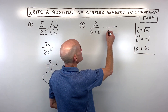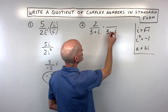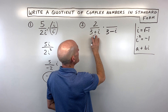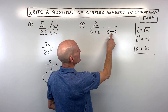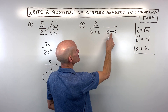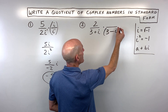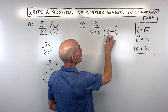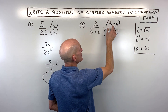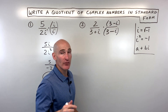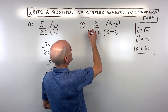The complex conjugate uses the same two quantities you see in the denominator, but you change the sign in between to the opposite. So if this was 3 minus i, we'd multiply by 3 plus i. In this case, it's 3 plus i, so we're going to multiply that denominator by 3 minus i. Of course, whatever we do to the denominator, we want to do to the numerator, because anything divided by itself is 1 — so it's not going to change the value of this fraction.